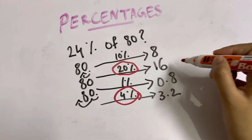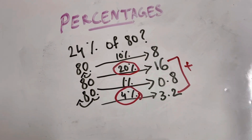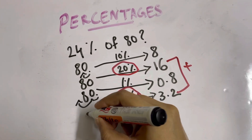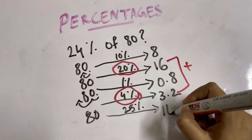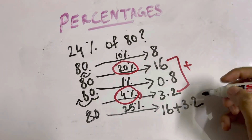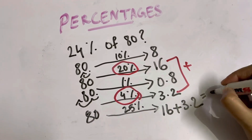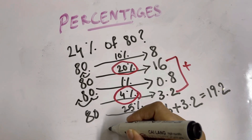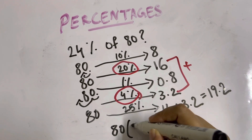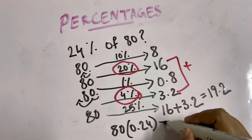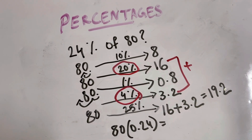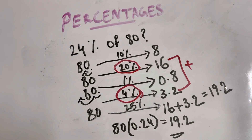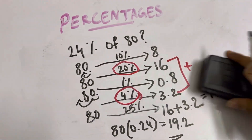For 24%, we add 20% plus 4%: 16 plus 3.2 equals 19.2. Let's confirm in our calculators: 80 multiplied by 0.24 is equal to 19.2 — perfect. Let's move on to the next question.